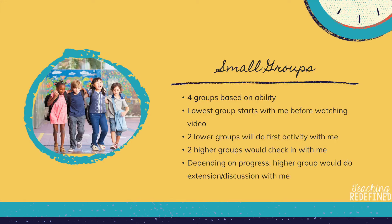For small groups, I typically have four groups — sometimes five depending on class size — that are ability-based and can change throughout the unit. The lowest group always starts with me before they watch the video; we do the first activity in the slides together while I'm teaching the concept. The next lower group also does the first activity with me, but they've watched the video first, so it's more about checking understanding than direct teaching.